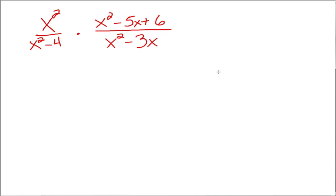Or we can do all of the simplifying ahead of time. So I think it's a good idea to factor everything — factor all your numerators, all your denominators, and let's see what happens. x squared is about as far as we can go; we don't need to write that as x times x.